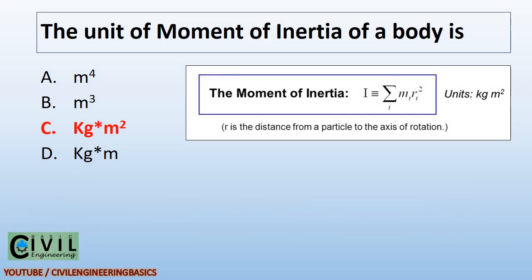The unit of moment of inertia of a body is kilogram meter square. The moment of inertia I equals mass of the body multiplied by the square of the distance of the particle to the axis of rotation.